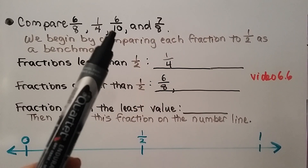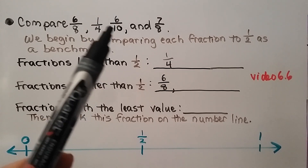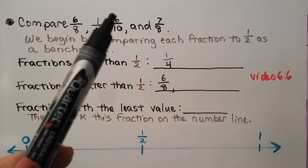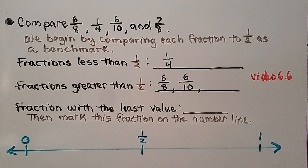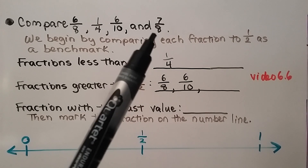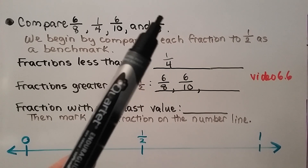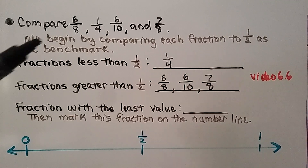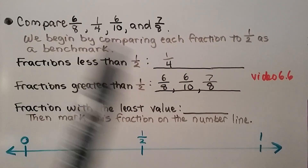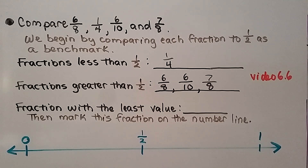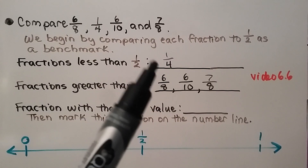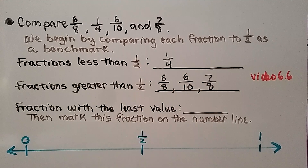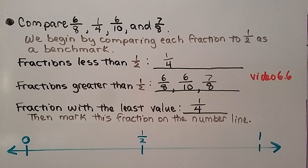Seven-eighths is almost eight-eighths — it's almost one. Four-eighths would be half, and seven-eighths is greater than that, so it's also greater than half. If you're confused about comparing to half, you need to see video 6.6 where we learned about benchmarks. We can see the fraction with the least value is the one less than half, since the rest are greater than half. The fraction with the least value is one-fourth, and we can mark it on the number line.